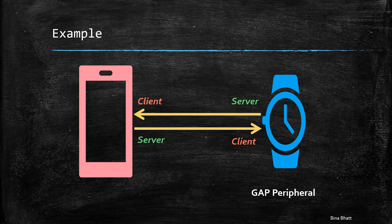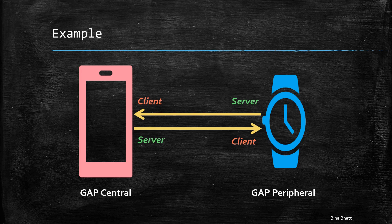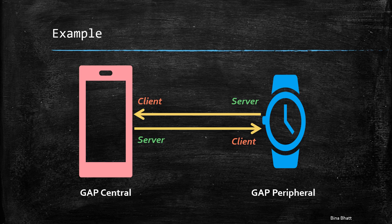Thus, the smartwatch continues to be a GAP peripheral and the smartphone continues to be a GAP central, irrespective of the switch in the GATT roles during this particular transaction.